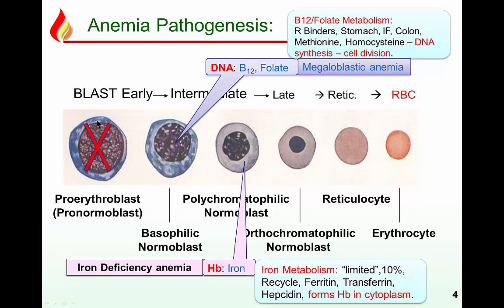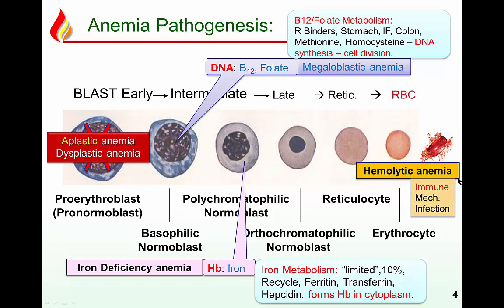The second group is deficiency of blast cells themselves — either the blast cells are not dividing, which is aplastic anemia, or they are there but blood cells are destroyed. Leukemias we will cover later. For now, understand aplastic anemia. We are not going to cover hemolytic anemias here — that will come later.